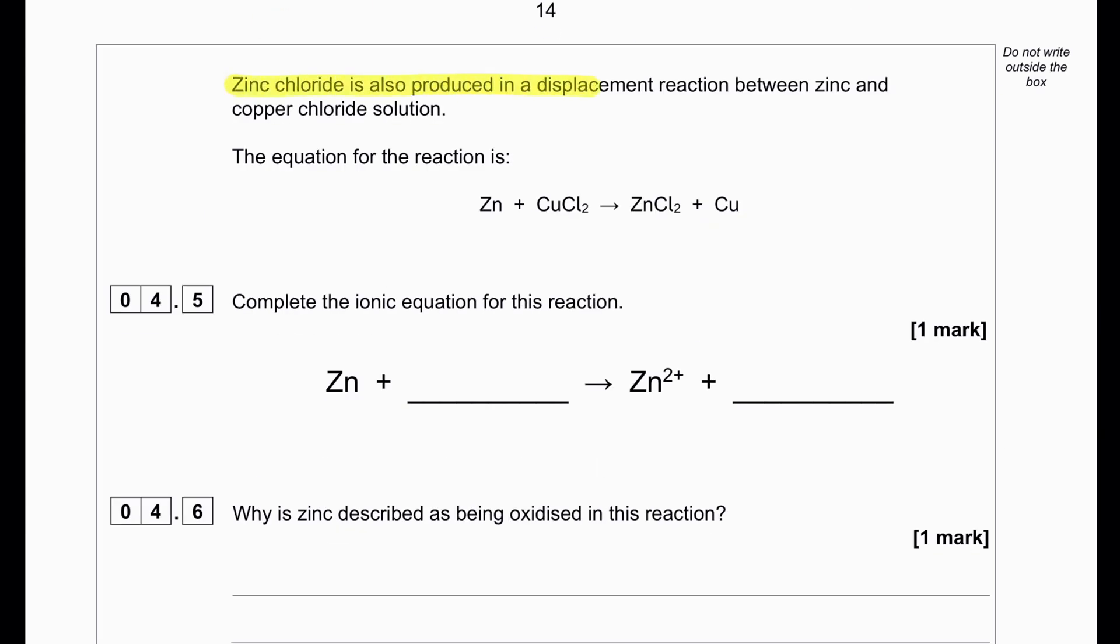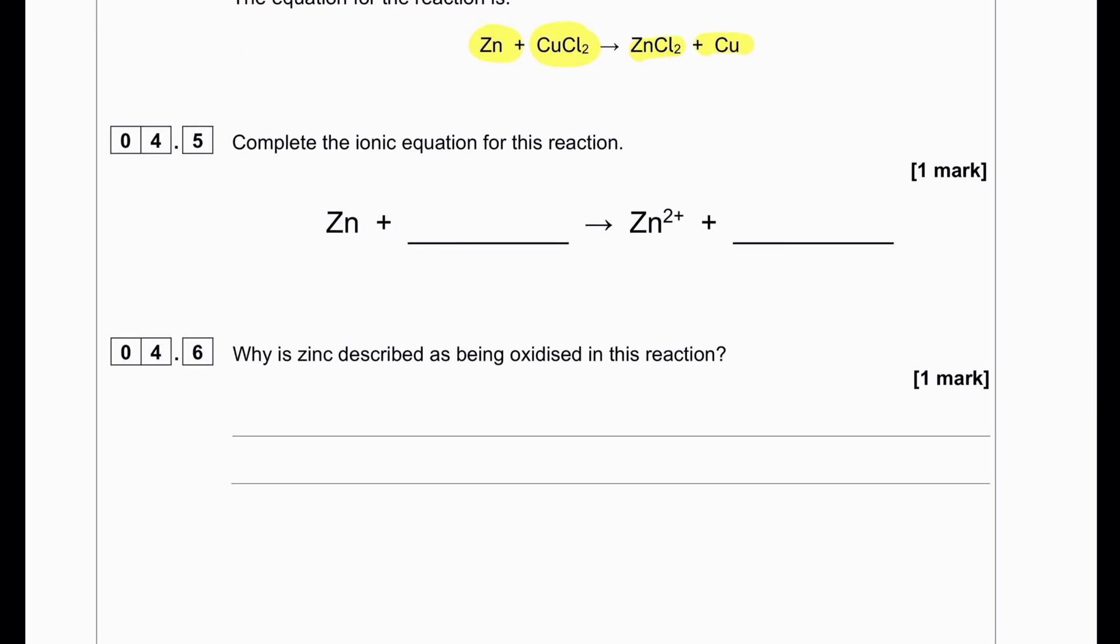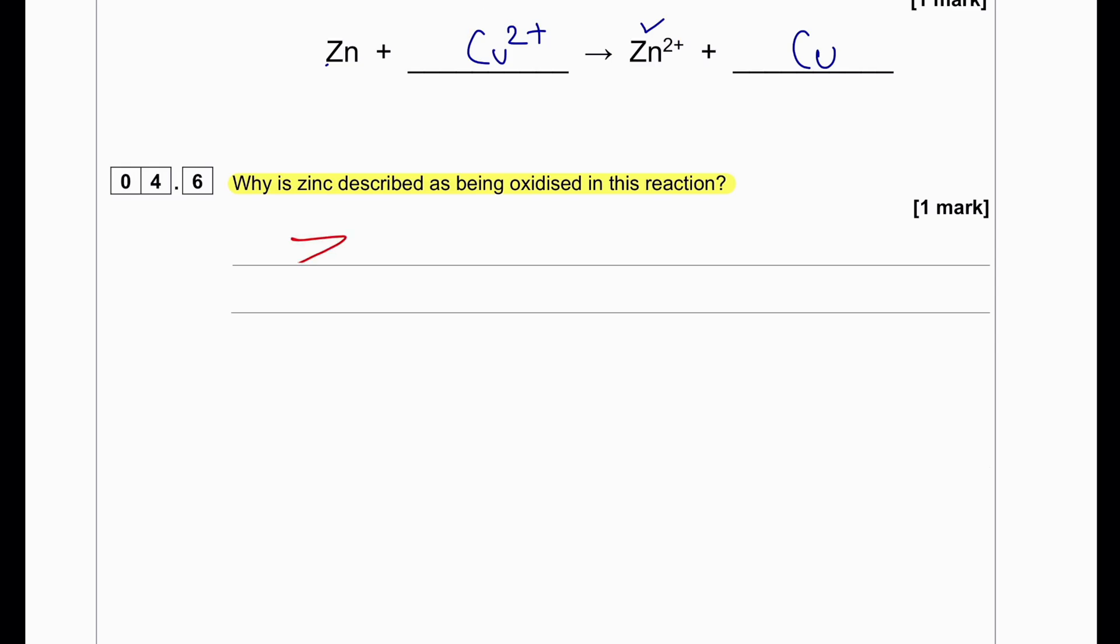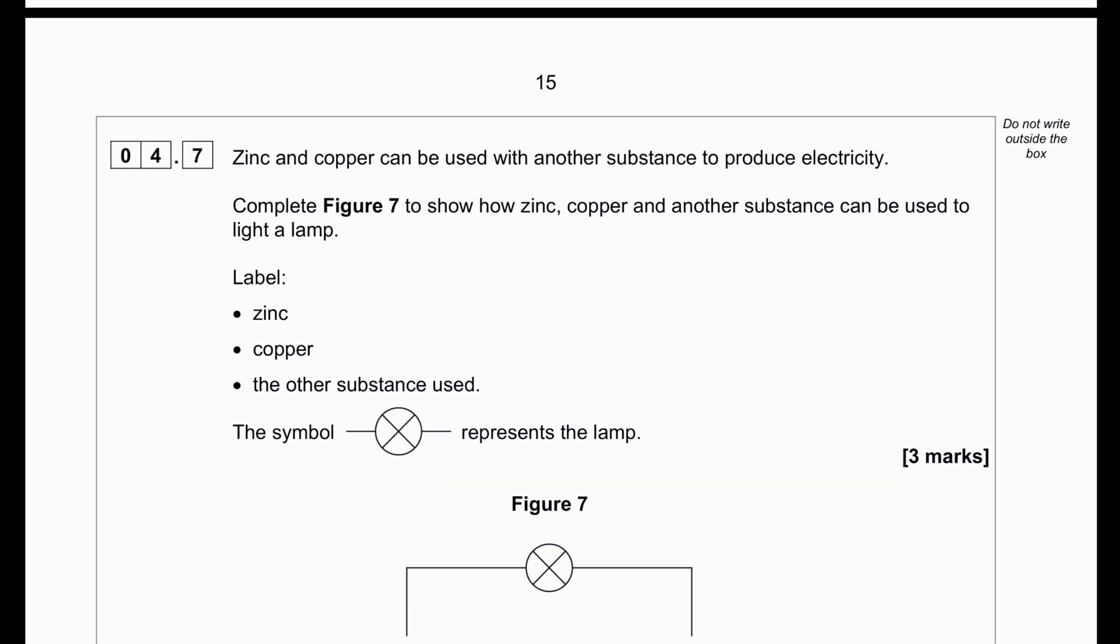Zinc chloride is also produced in a displacement reaction between zinc and copper chloride solution. Complete the ionic equation for this reaction. When zinc goes on the other side, zinc turns into Zn2+. Copper 2+ must gain that electron that is given by the zinc. So copper 2+ will go on the other side and become copper metal. Why is zinc described as being oxidized in this reaction? Because the zinc is losing electrons, so we can say zinc is oxidized.